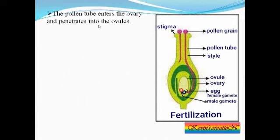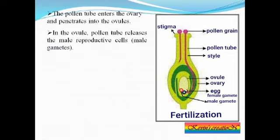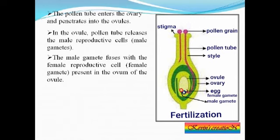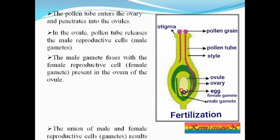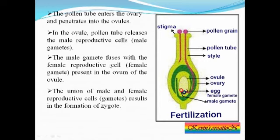The pollen tube enters the ovary and penetrates into the ovule. Inside the ovule, the pollen tube releases the male reproductive cells or male gametes. The male gametes fuse with the female gamete or egg present in the ovule. The union of these male and female gametes results in the formation of a zygote.